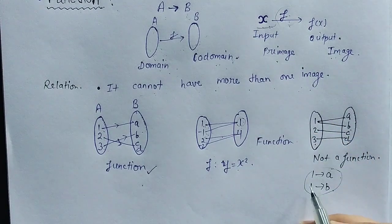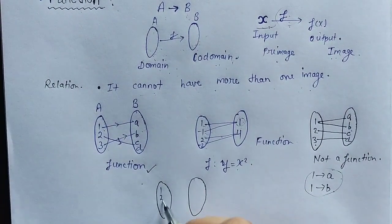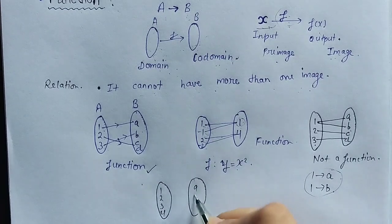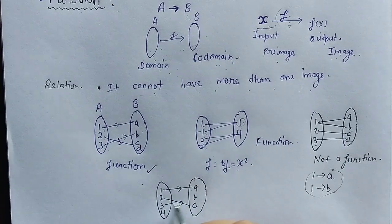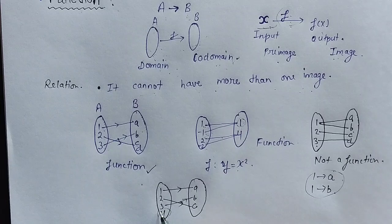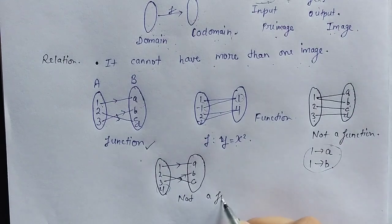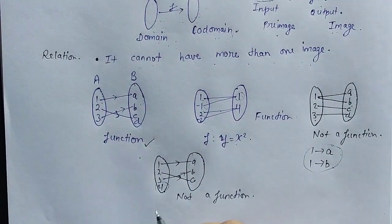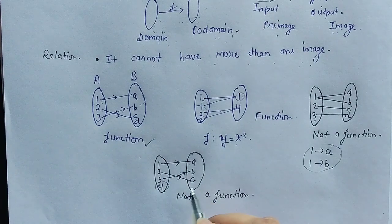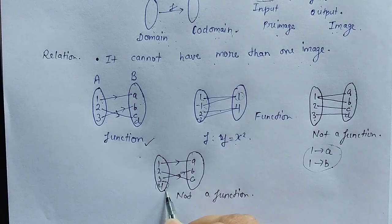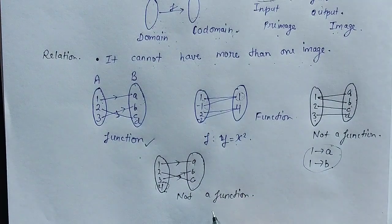Hope that is clear. Now another example: 1, 2, 3, 4 in the domain and A, B, C in the co-domain, where 1 maps to A, 2 maps to C, 3 maps to B, and 4 is left unmapped. So it is also not a function, because the definition of a function requires every element in the domain to get a unique image. Here 4 is not mapping to any element in the co-domain, so it cannot be a function.